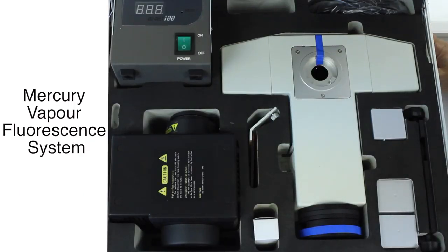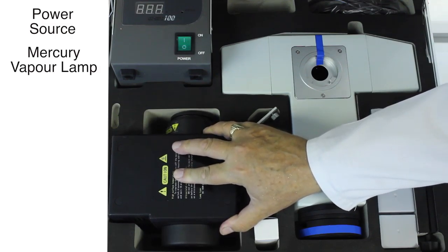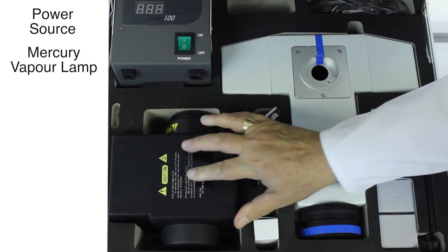In the aluminium case which you'll receive, there is the mercury vapor fluorescence system. That's the power source there. This is the housing for the mercury vapor lamp.